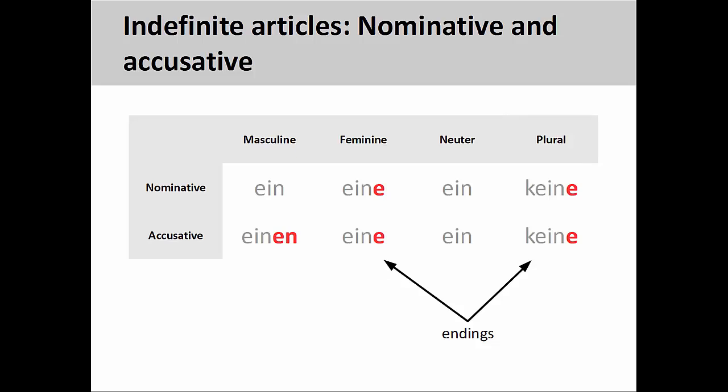The accusative indefinite articles are einen (masculine), eine (feminine), ein (neuter), and keine (plural). Again, the feminine and plural indefinite articles follow the definite article pattern and add an -e ending.